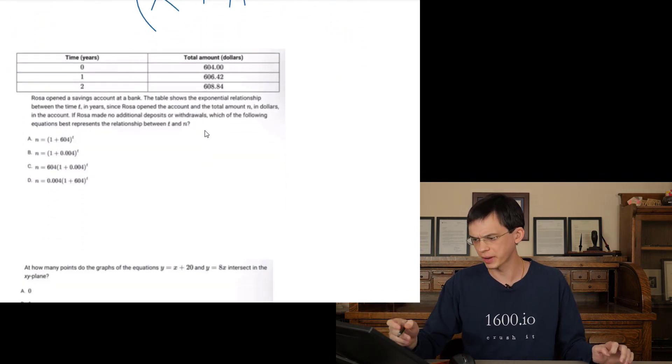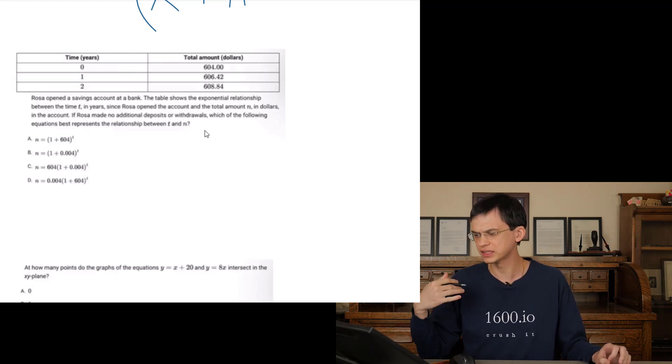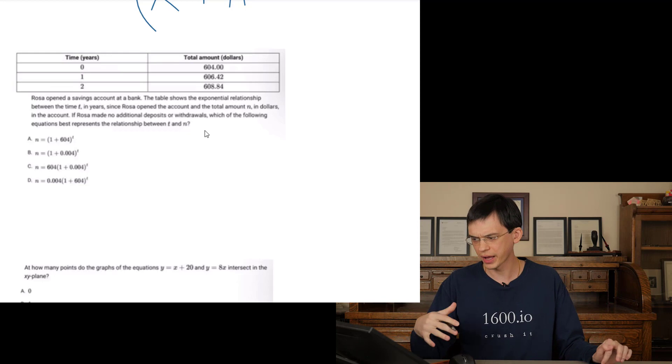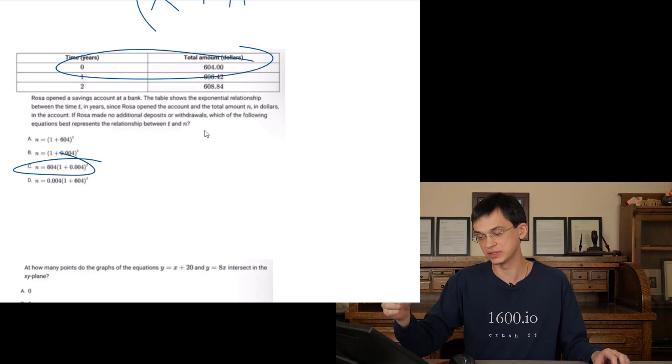Here we have some relationship. I notice all the answer choices are in exponential form. You're making deposits, exponential relationship. There's only one answer choice that has a Y intercept of 604 and it's going to be C. There's only one value that when we have X or T equals zero, the Y value is going to be 604. That's C.